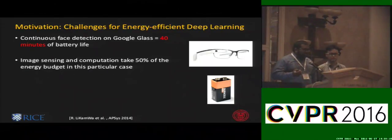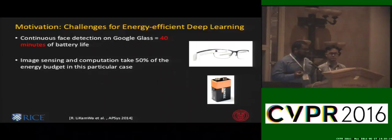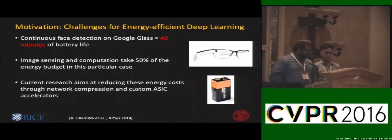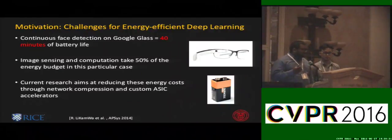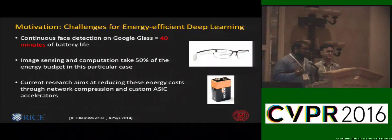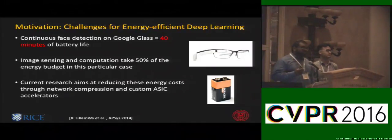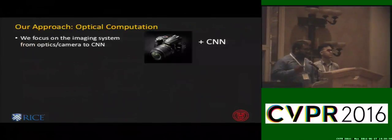In this particular example, image sensing and computation each took about 50% of the energy budget for this application. Current research aims at reducing these energy costs through either network compression methods — making models smaller — or using custom ASIC hardware accelerators to reduce the electronic footprint of these networks.